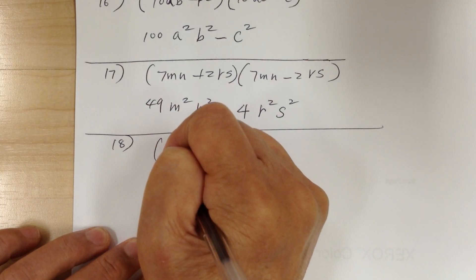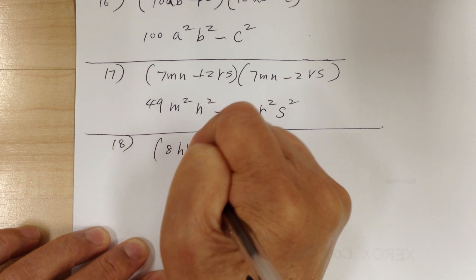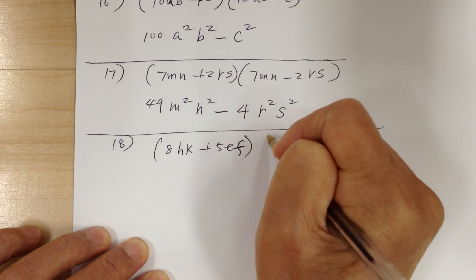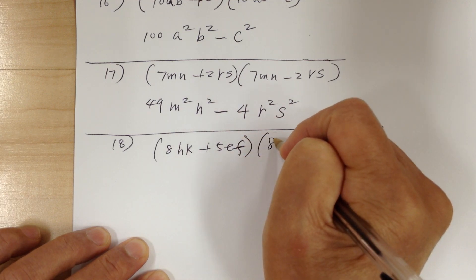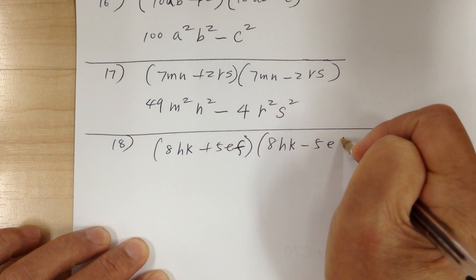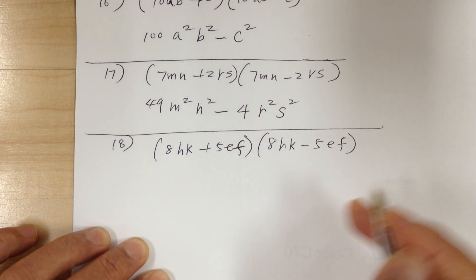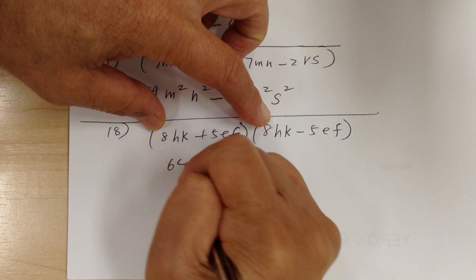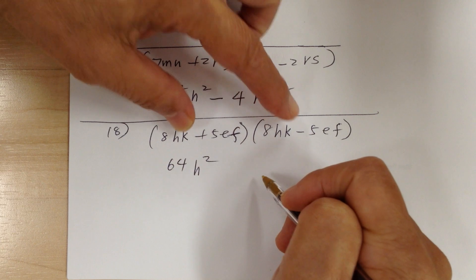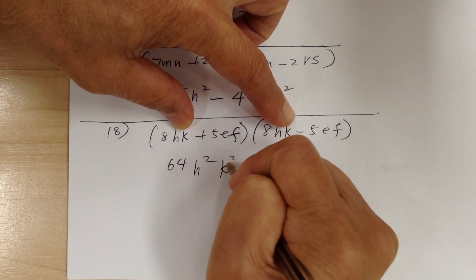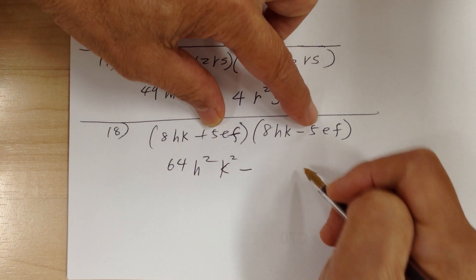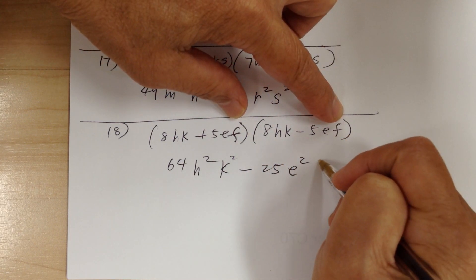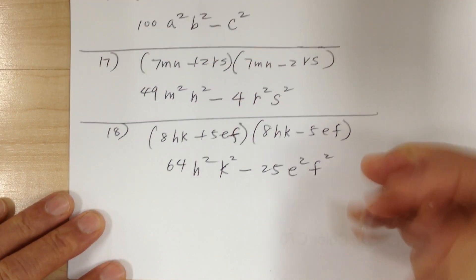Number 18: you have 8hk plus 5ef times 8hk minus 5ef. You can use the conjugate shortcut — multiply the corresponding parts: 8 times 8 is 64, h times h is h squared, k times k is k squared, plus times minus is minus, 5 times 5 is 25, e times e is e squared, f times f is f squared. And that's it.